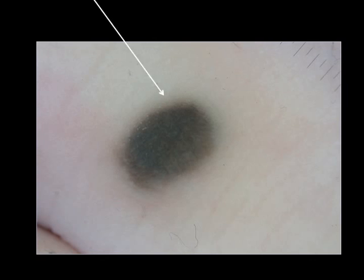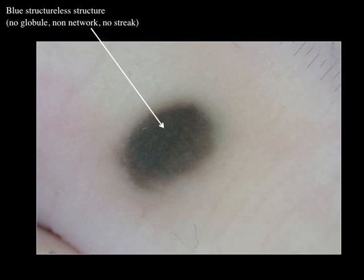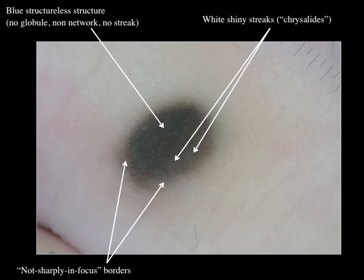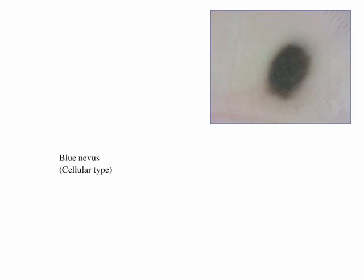And here are my comments. You have a blue structureless area with no globules, no network, no streaks, no other features. The borders are not in focus but fuzzy-like. And you can see white shiny streaks also known as chrysalids. These streaks are only visible with polarized light, and this picture has been taken with a polarized light camera. This is a typical blue nevus of a cellular type in that case.